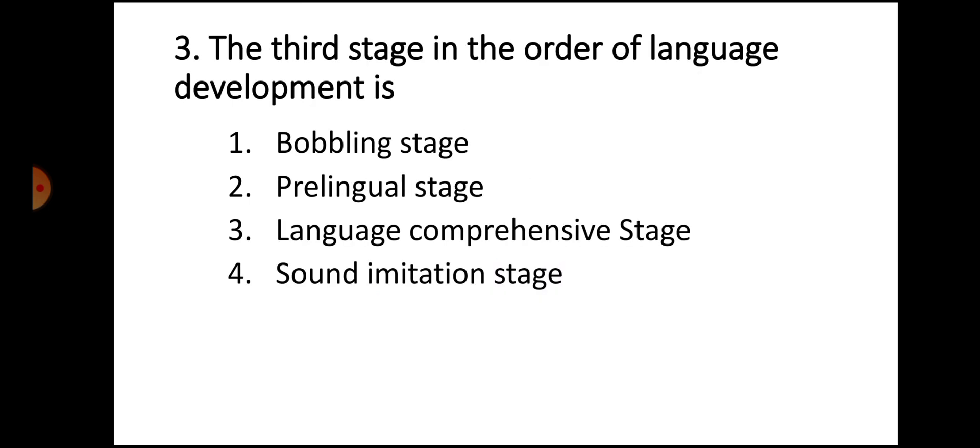Question number 3: The third stage in the order of language development is: Option 1 babbling stage, Option 2 pre-lingual stage, Option 3 language comprehensive stage, Option 4 sound imitation stage. The correct answer is Option 4, sound imitation stage.